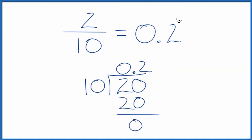If you wanted to check your work, you could take the answer, the 0.2, and multiply that by the denominator. When you do that, you'll get 2, the numerator.